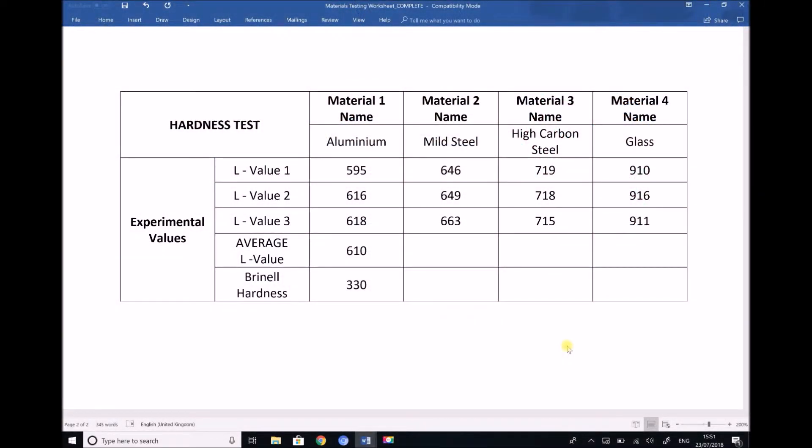So now that we've collected our test data and we've obtained three L values for each of our four materials, we're now in a position to calculate the average L value for each material and then determine the Brinell hardness using a conversion graph. Now as you can see I've already completed this for the aluminium and I'll show you how I generated those results and then you'll have an opportunity to complete this for the other three materials in the practice questions.